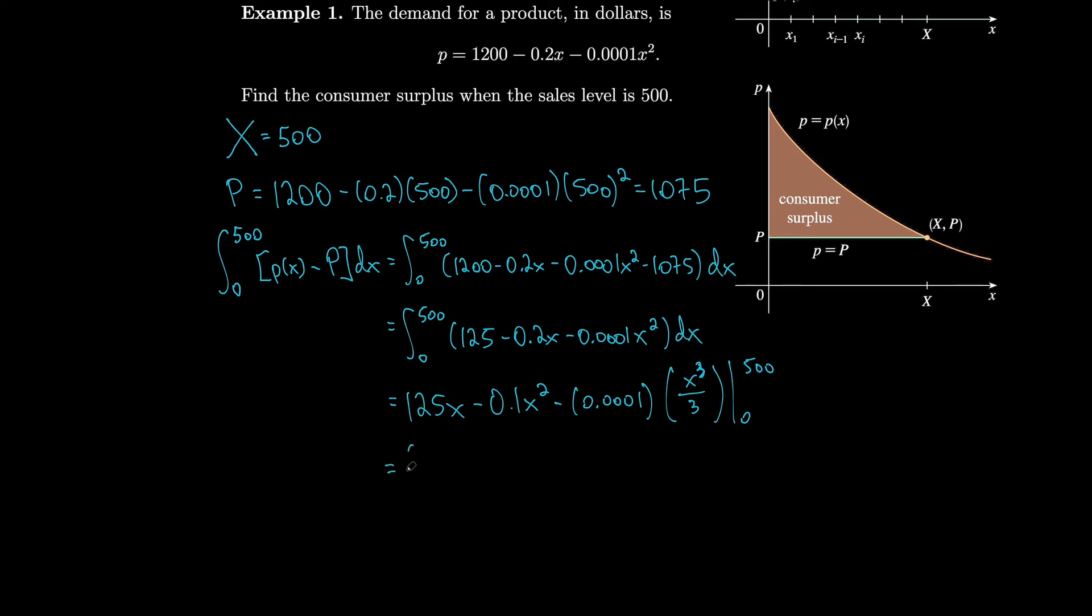So we get 125 times 500 minus 0.1 times 500 squared, and then we subtract off 0.00001 times 500 cubed all over 3. Notice there's no contribution from 0. This actually ends up being $33,333.33.